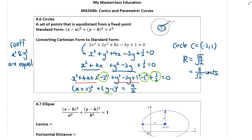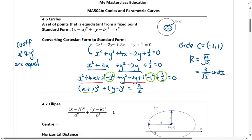This is how we convert the Cartesian form to a standard form of a circle. Identify that the coefficient of the x square and y square are equal.